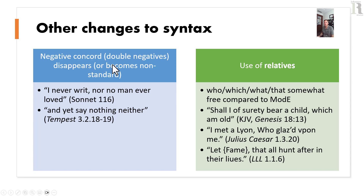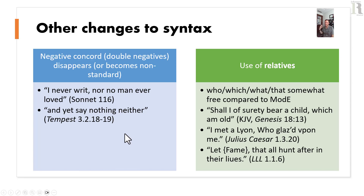Negative concord or the double negative becomes non-standard, though it doesn't disappear — it continues in regional, race, and class dialects. Shakespeare writes 'I never writ nor no man ever loved,' which under the influence of logicians teaching that two negatives make a positive — as in mathematics — would be considered incorrect. Another example from The Tempest: 'yet say nothing neither.' Shakespeare used these forms because the prescriptive rules against them wouldn't be invented for another 100 to 150 years.